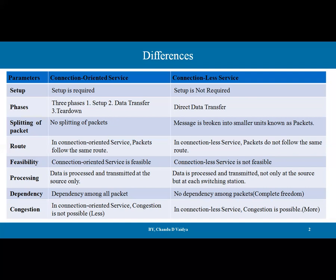Next is dependency of packets. In connection-oriented service there is full dependency among all packets — for example, if a message has order 1, 2, 3, 4, that order must be followed at every intermediate station. But in connectionless service there is no dependency among packets; they have complete freedom. Packet one can travel from route one, packet two from route two, and so on.